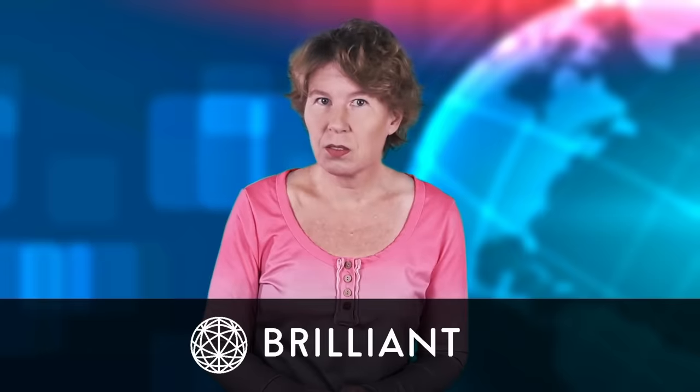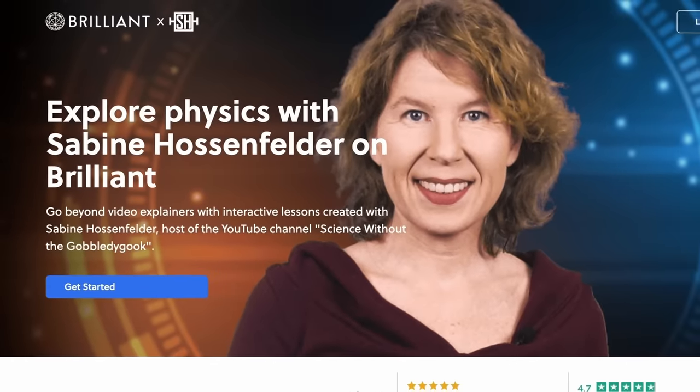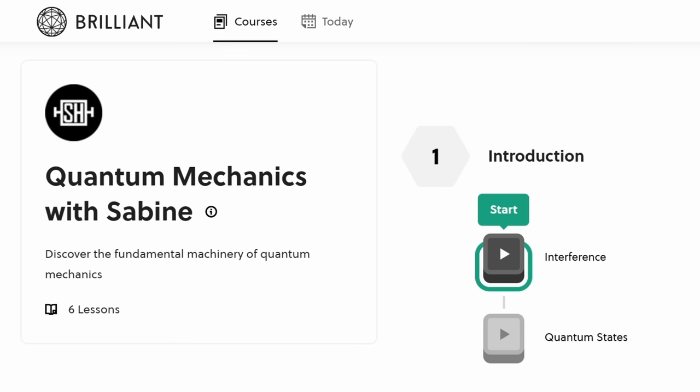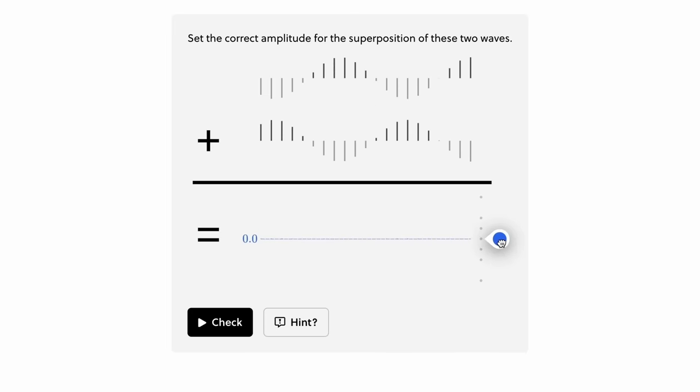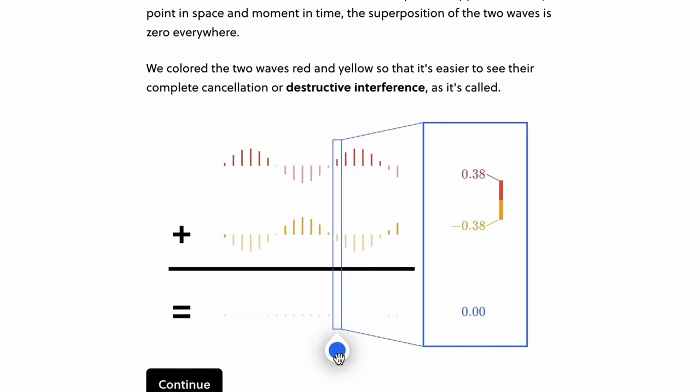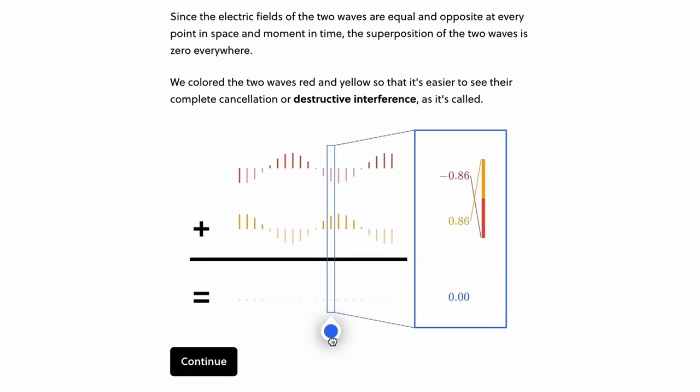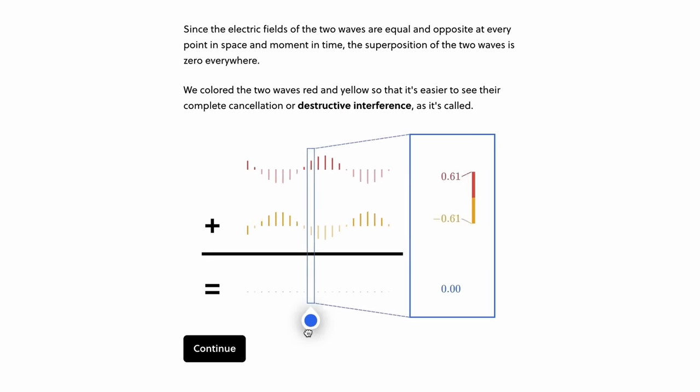Did you know I have a quantum mechanics course on Brilliant.org? It's a beginner's course that you can take without any background knowledge. It'll introduce you to topics such as interference, superpositions and entanglement, the uncertainty principle, and Bell's theorem.